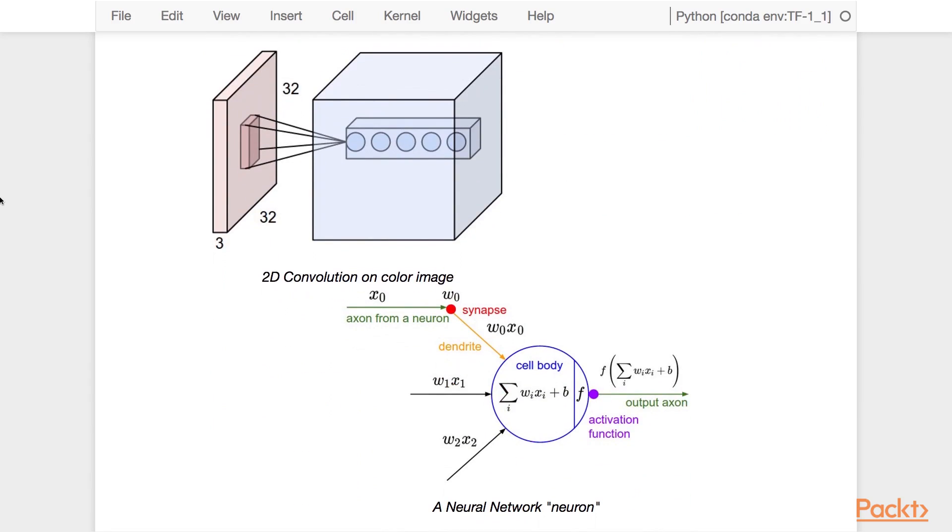As we can see in this diagram, the input here is a 32 by 32 image with three color channels. As you convolve the feature maps across the image, you create an output volume, in this case with an output dimension of 5.